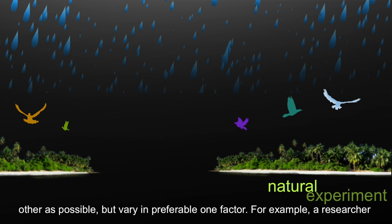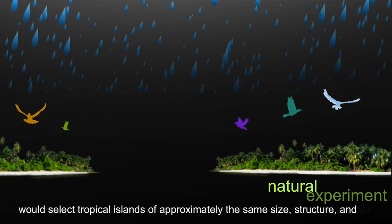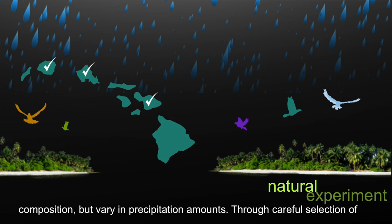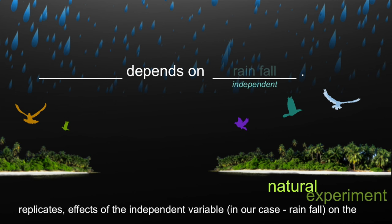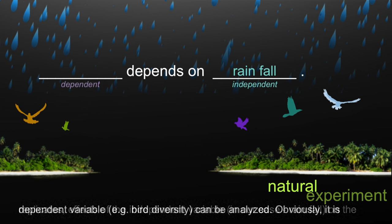For example, a researcher would select tropical islands of approximately the same size, structure, and composition, but known to vary in precipitation amounts. Through careful selection of replicates, effects of the independent variable — in our case, rainfall — on the dependent variable, for example bird diversity, can be analyzed.